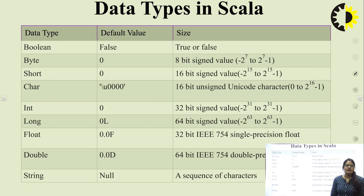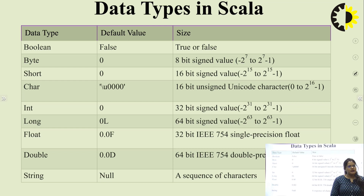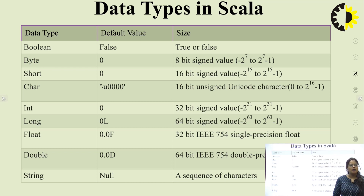Next is data types in Scala. Data types in Scala are similar to Java in terms of their storage length, except that in Scala there is no concept of primitive data types. Every type is an object and starts with a capital letter.